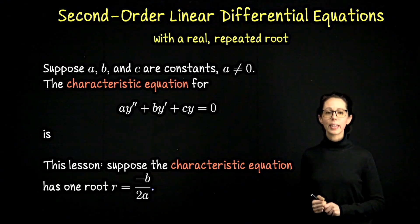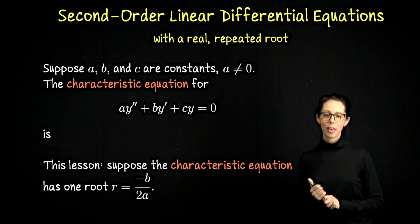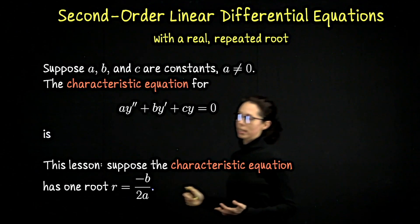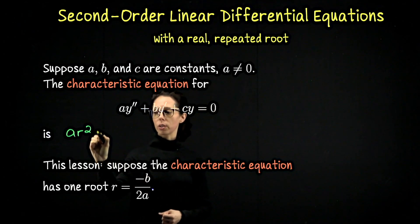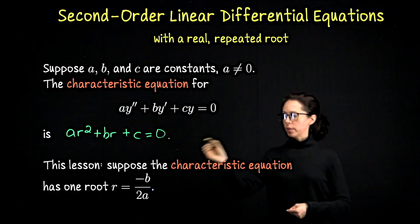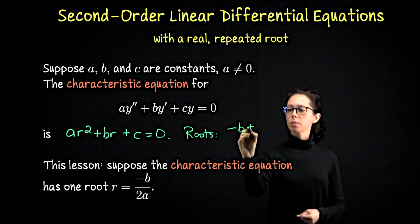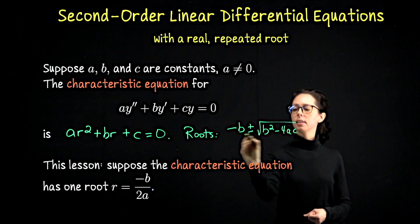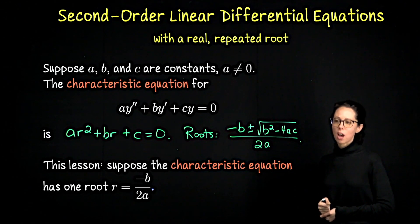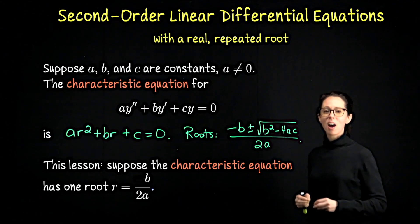In this video, we are going to continue talking about linear second-order differential equations of the form AY'' + BY' + CY = 0. We've discussed these for the past two videos. Every time we see this kind of differential equation, we write down the characteristic equation AR² + BR + C = 0, whose roots from the quadratic formula are negative B ± √(B² - 4AC) / 2A. In the last lesson, we talked about solutions when the roots are real and distinct.